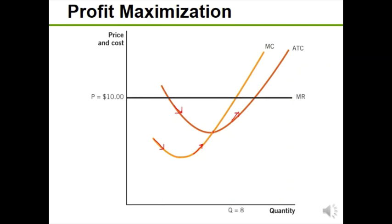Now let's see profit maximization. Marginal revenue equals price because we are a price taker — we don't control the market price. For each newspaper we produce, it brings in a marginal revenue of ten dollars. Take a minute and try to find the profit-maximizing output, where marginal revenue equals marginal cost — or equivalently, where price equals marginal cost.